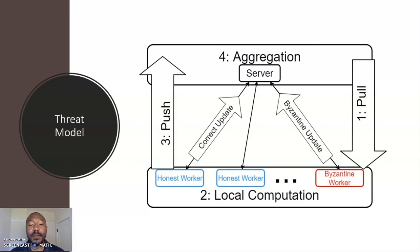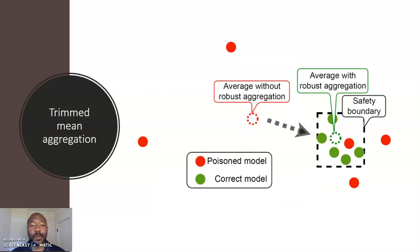We consider a threat model where a subset of workers have errors or failures that are potentially adversarial, and send back arbitrary potentially coordinated model updates. In this setting, we can use a trim mean aggregation. So, this removes the largest and smallest B values, dimension-wise, before computing the average. Trim mean is a fairly classic technique, and is a known standard approach for estimating robust averages.